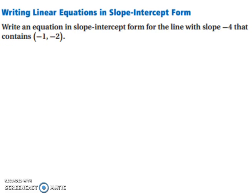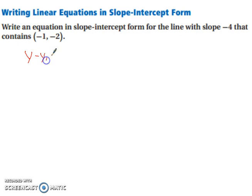Now let's look at writing linear equations in slope intercept form. To do this we're going to use point slope form since we're given a point and a slope. Point slope form is y minus y₁ equals m times x minus x₁.